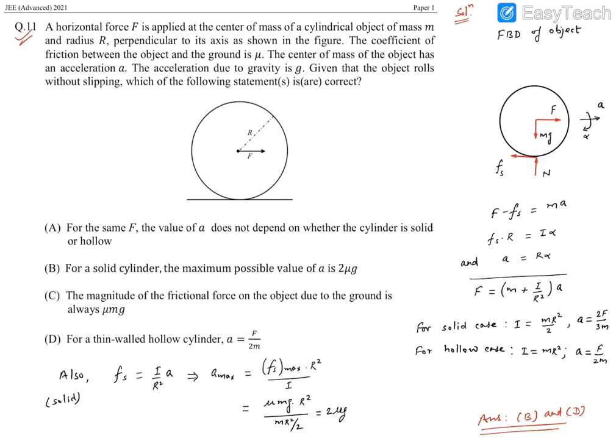Question number 11 is a multi-correct choice problem. A horizontal force F is applied at the center of mass of a cylindrical object of mass m and radius R, perpendicular to its axis as shown in the figure.